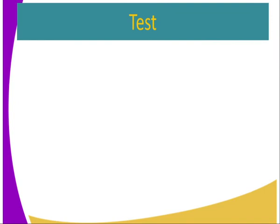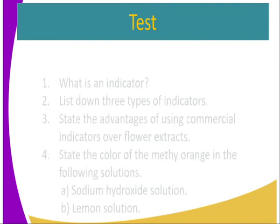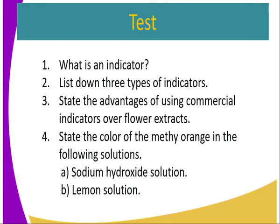Now, to test whether we have achieved the goals of this lesson: Question number one — what is an indicator? Question number two — list three types of indicators.